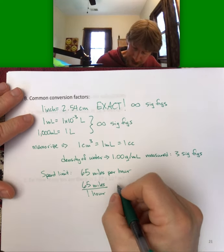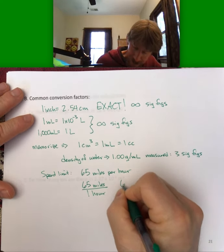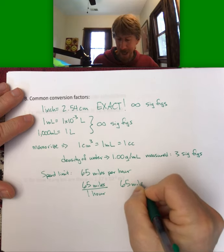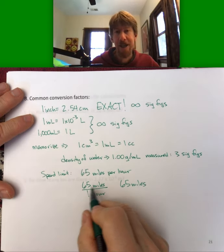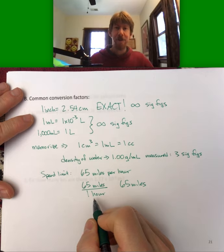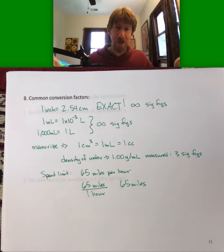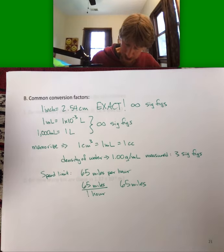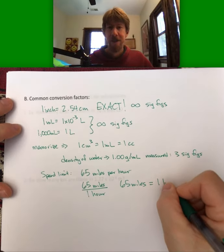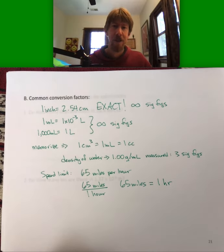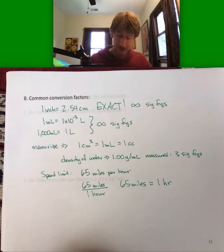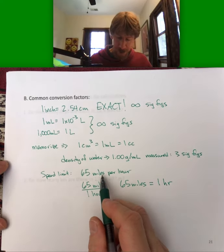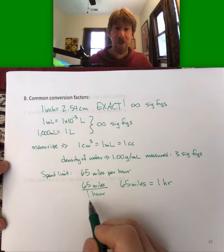There are definitely spots on Highway 50 where 65 miles per hour is the speed limit. We can break this conversion factor apart into an equal statement: 65 miles of distance equals one hour of travel time. But typically you'll keep it in the form the conversion factor is given to you.